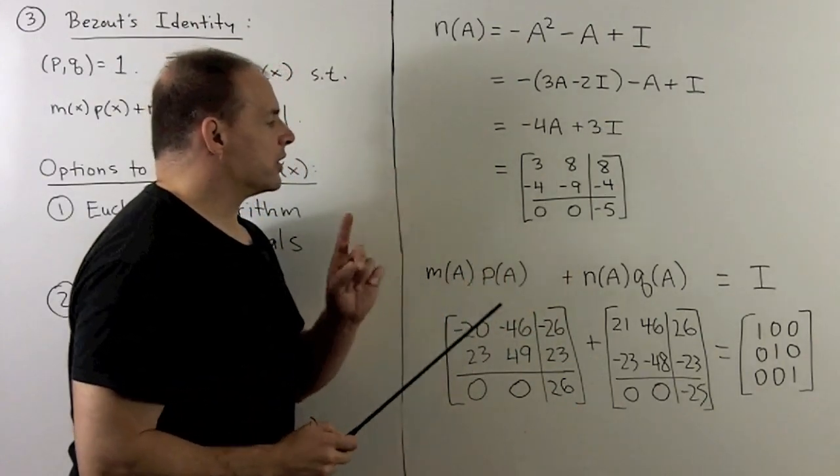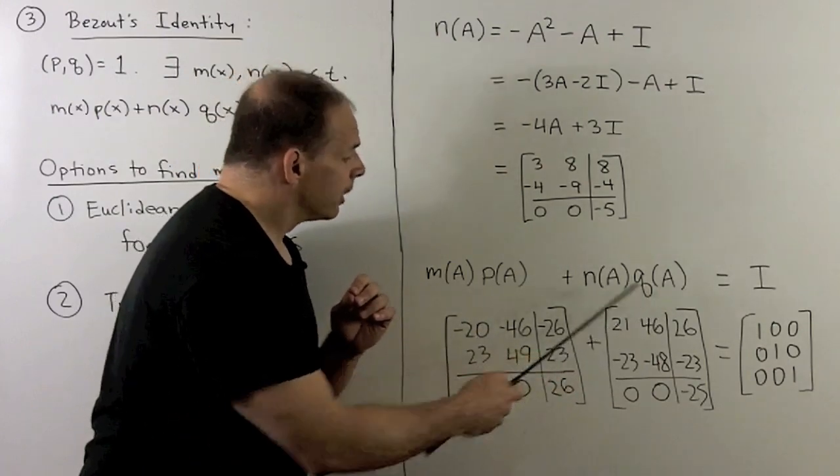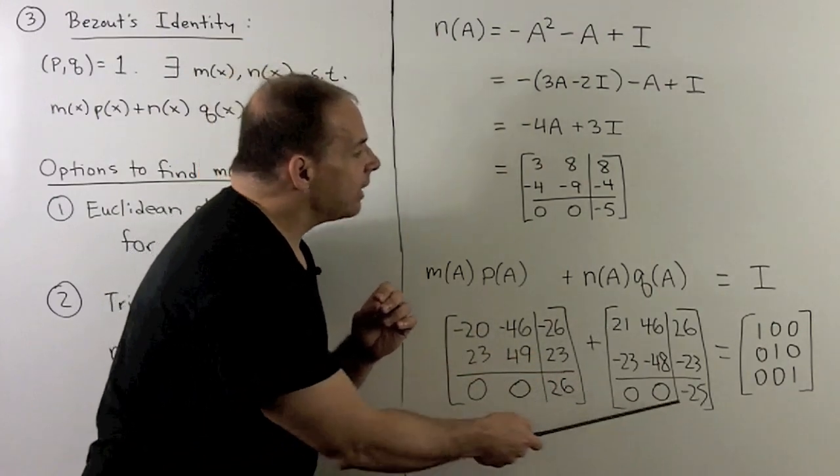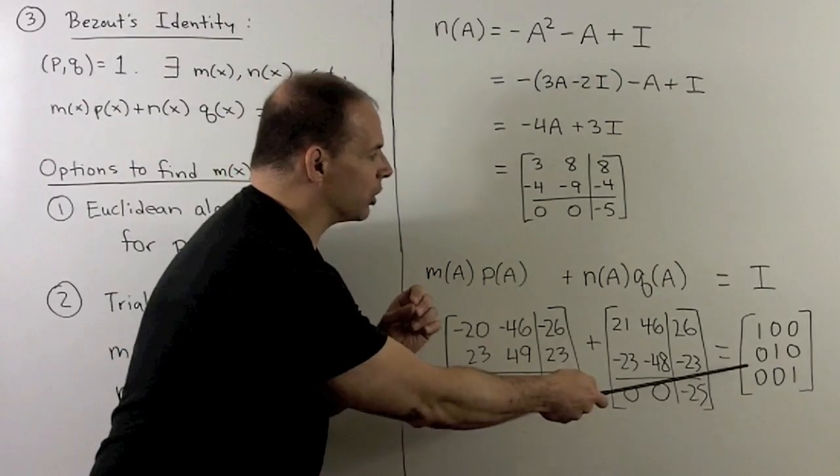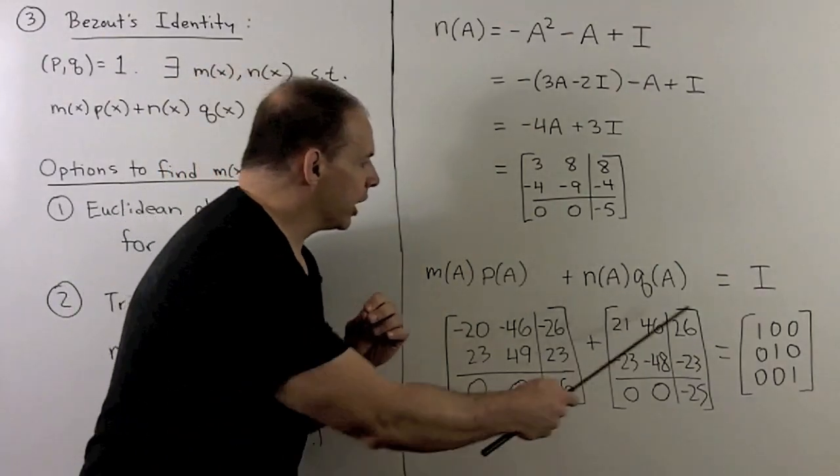If we do all the substitutions into the left-hand side of our equation, we'll have these products. When we work them out and add, what comes out is the identity matrix. So the M and N that we found are going to work with our equation.